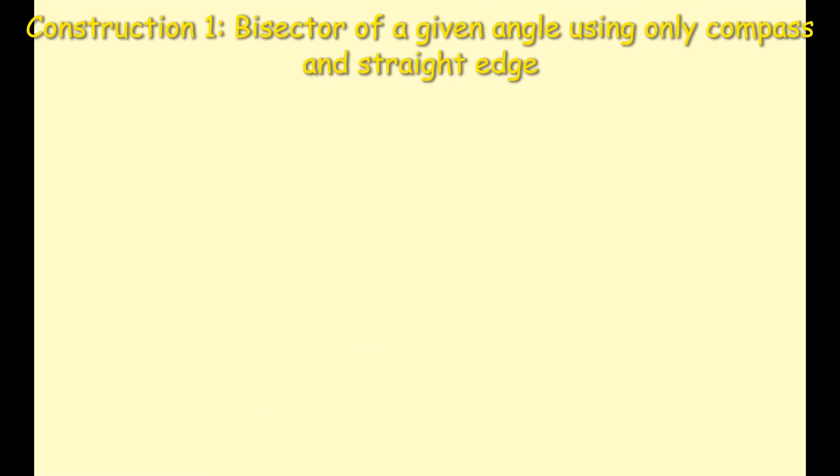In this video, we're looking at construction 1, which asks us to construct the bisector of a given angle using only a compass and a straight edge.